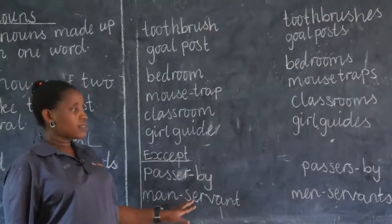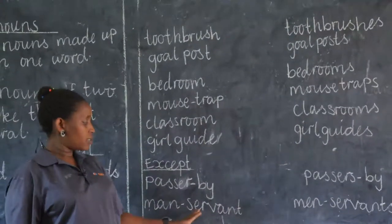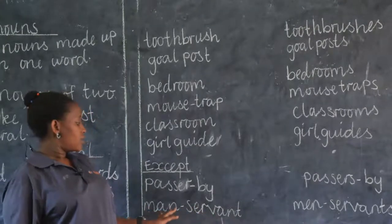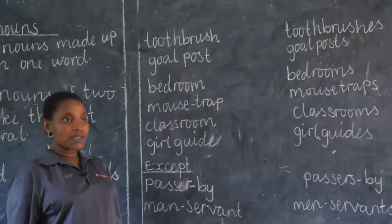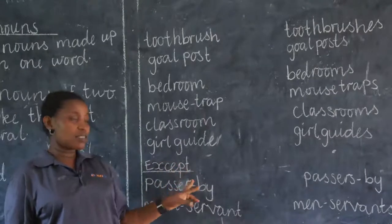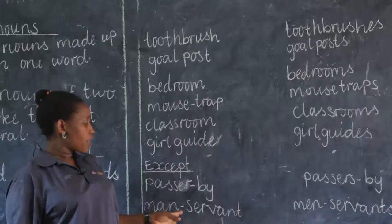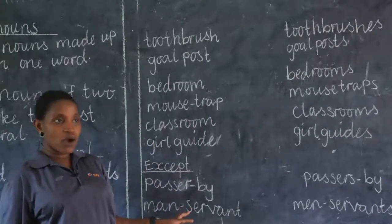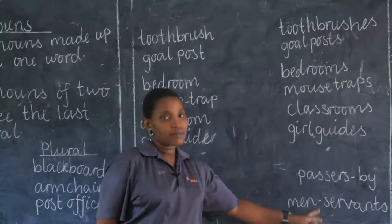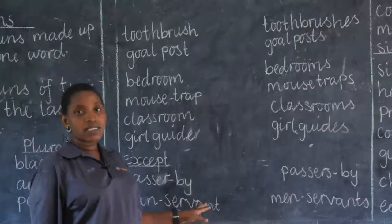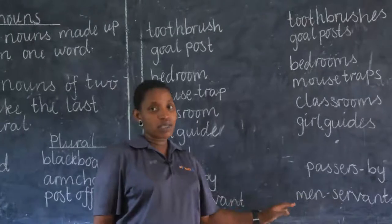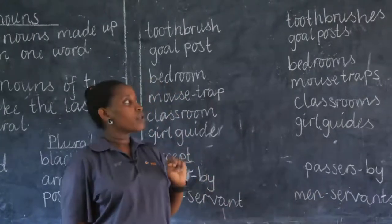Then we have manservant. This one is also very interesting — we make both of them plural. That's why we said there are exceptions. So we are going to say men servants. Another one is womanservant, where we are going to say women servants. We make both of them plural.